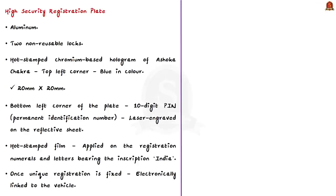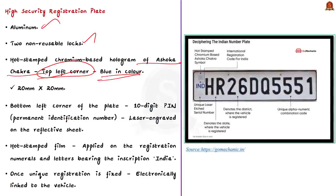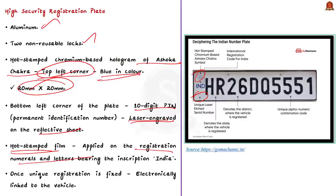HSRP is made up of aluminium and is fixed on the vehicle using two non-reusable locks. It comes with a hot-stamped chromium-based hologram of Ashok Chakra in blue colour on the top left corner, measuring 20mm x 20mm. The bottom left corner has a 10-digit permanent identification number (PIN), laser-engraved on the reflective sheet. The HSRP also comes with a hot-stamped film on registration numerals and letters bearing the inscription 'India' at 45-degree angulation, and is electronically linked to the vehicle once fixed.